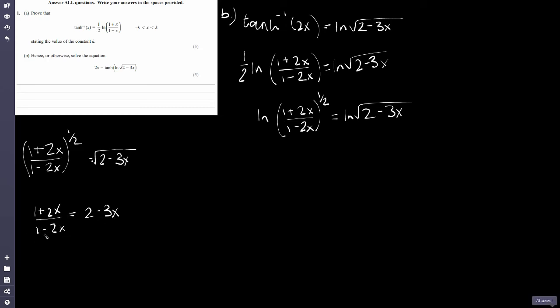I'm going to get 1 plus 2x over 1 minus 2x, and this is going to be equal to 2 minus 3x. Now, times both sides by 1 minus 2x. We can eliminate this denominator here and then just solve for x. And we've got it there. So it's going to be 1 plus 2x is going to be equal to 1 minus 2x times 2 minus 3x. And now we just got to solve this. So if I expand all this and then simplify it, what you'll get is 6x squared minus 9x plus 1, and this is equal to 0. If we're solving it.